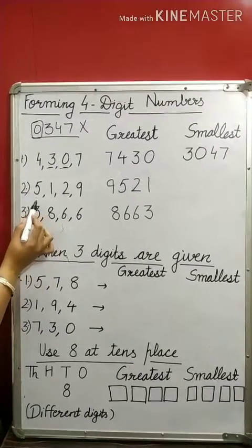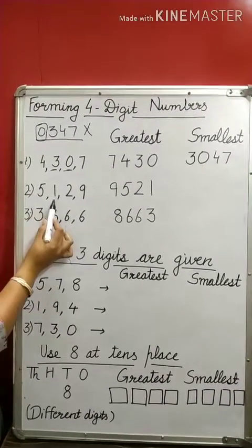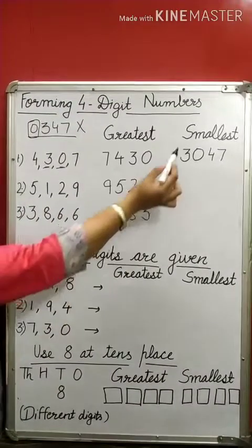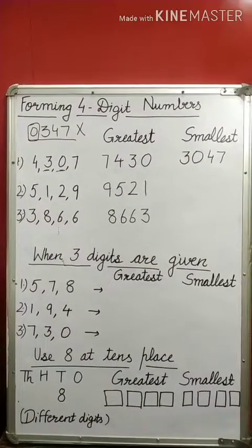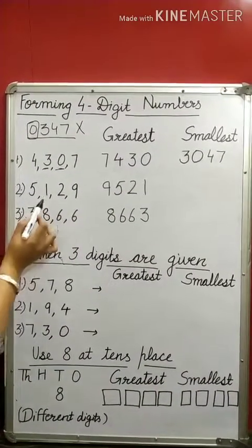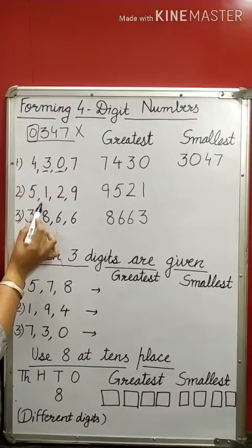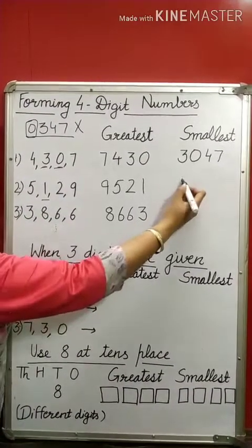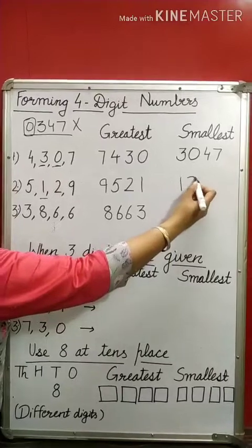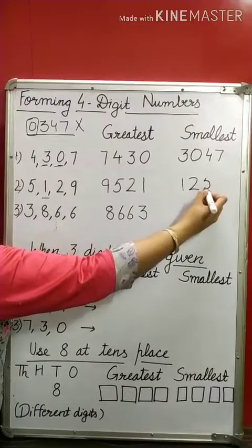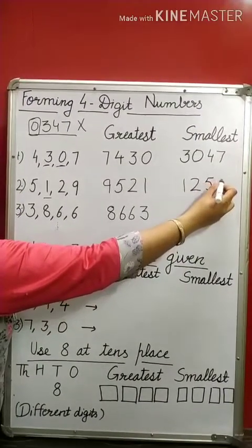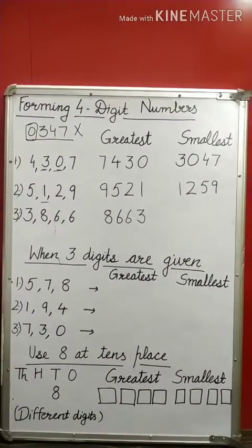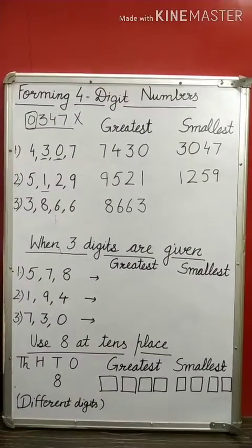Let's take another example: 5, 1, 2, 9. We need to form the smallest 4-digit number. Again we will start with the smallest digit. The smallest digit is 1 here, so I will arrange them in ascending order: 1, 2, 5, 9. The smallest 4-digit number is 1259.